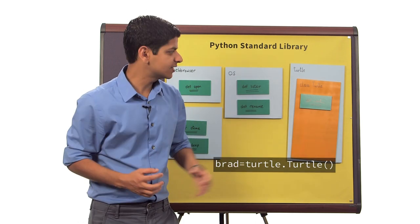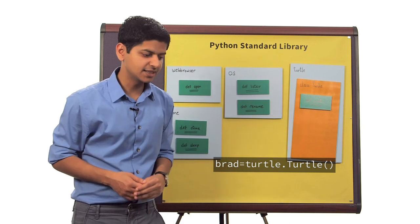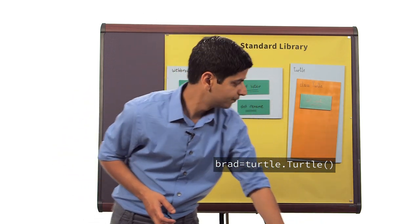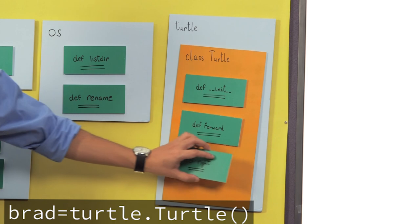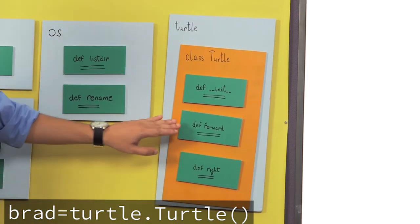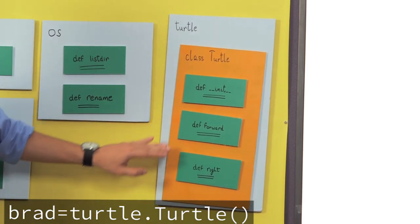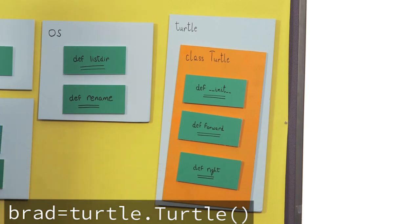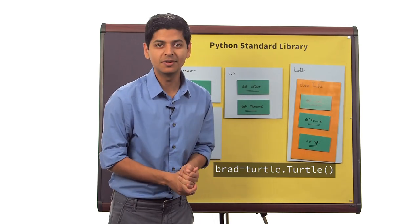Brad can now access all of the methods that are inside class turtle, like forward and right. Forward makes brad turn forward, and right makes brad turn to the right. Don't take my word for it. Let's look for them in the documentation.